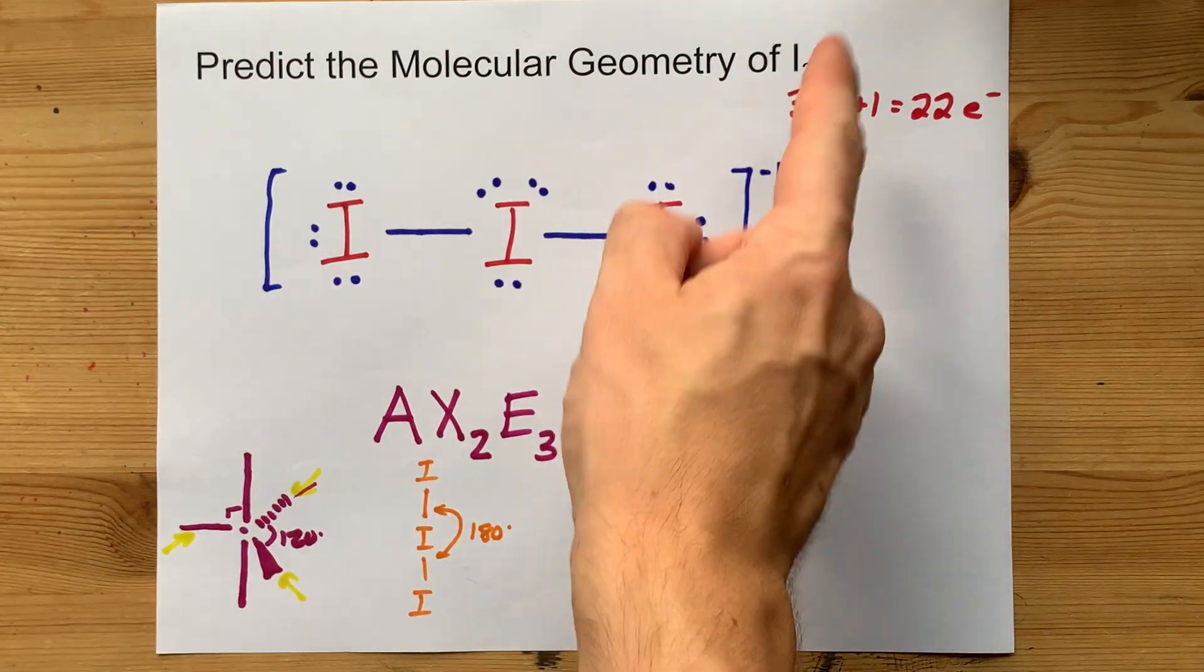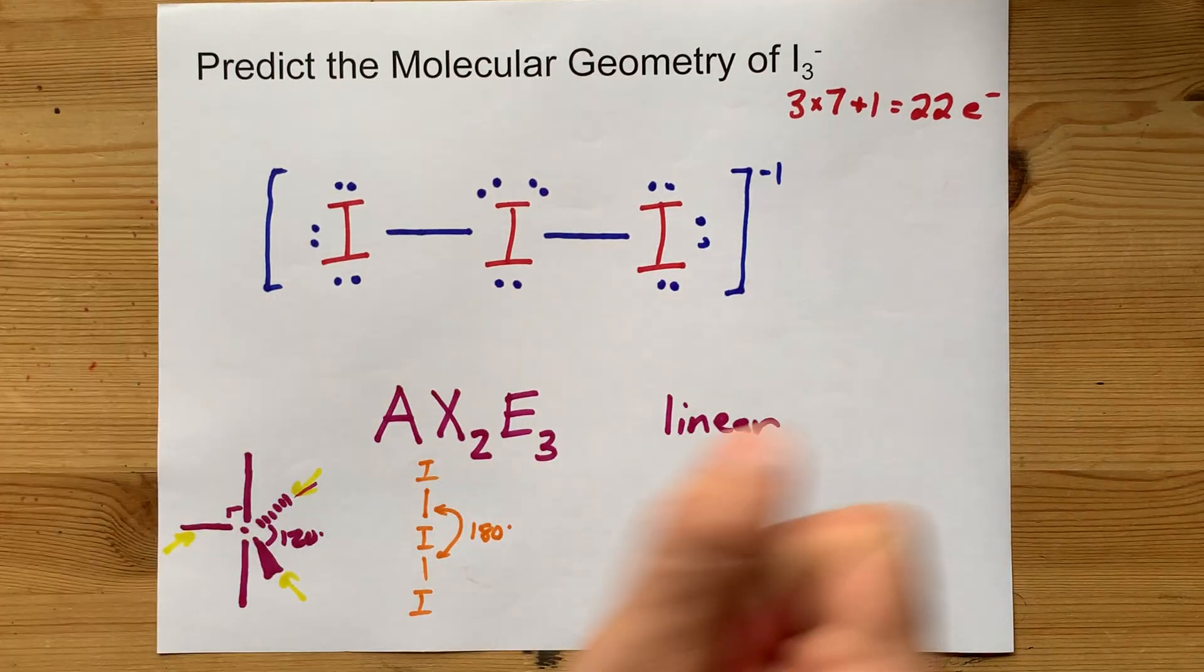So to summarize, I3- is linear. Best of luck.